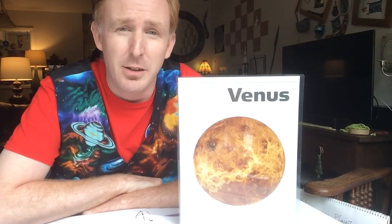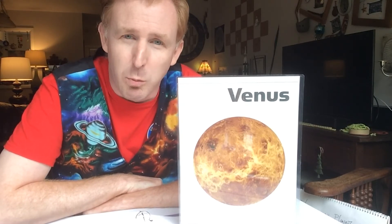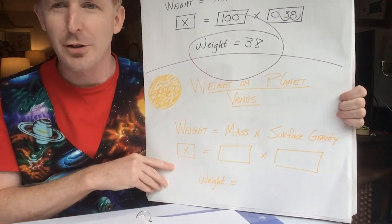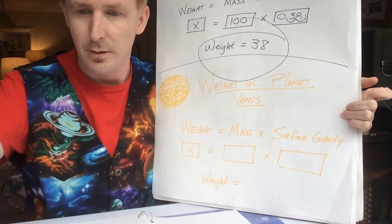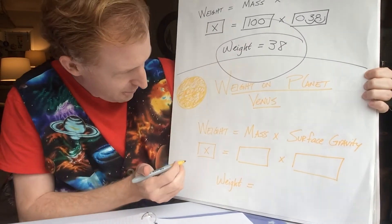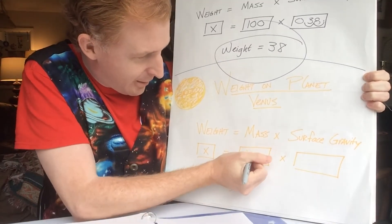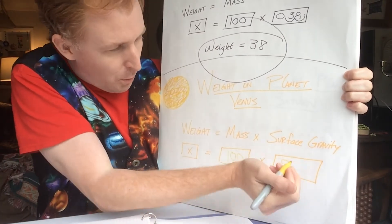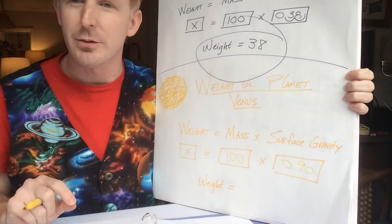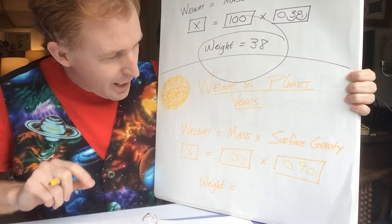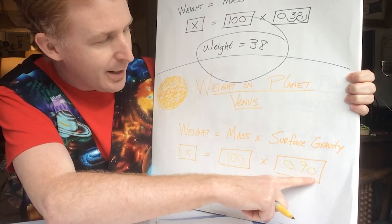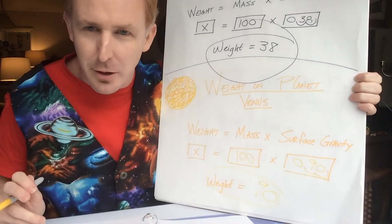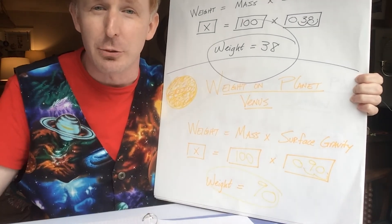But if we were to visit, here is how much we would weigh on the surface of Venus. Our mass calculated earlier is 100, and the surface gravity of Venus is 0.90 — very close to one because of its similar size to Earth. Solving for weight: 100 times 0.90 equals 90. So you would weigh 90 — whether that be 90 pounds or 90 newtons — very similar to what you would weigh here on Earth.